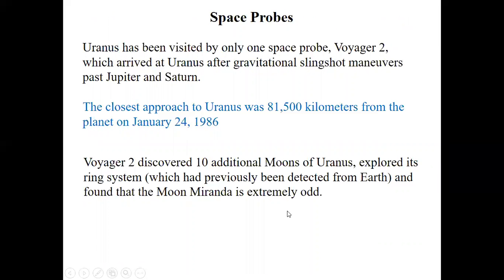Space probes. Do we have any space probe that visited Uranus? Yes, they have been visited only once by space probe Voyager 2, which arrived at Uranus after the gravitational slingshot from Jupiter and Saturn. The closest approach to Uranus was 81,500 kilometers from the planet on January 24, 1986. Voyager 2 discovered 10 additional moons of Uranus, explored its ring system which had previously been detected from Earth, and found that the moon Miranda is extremely odd.